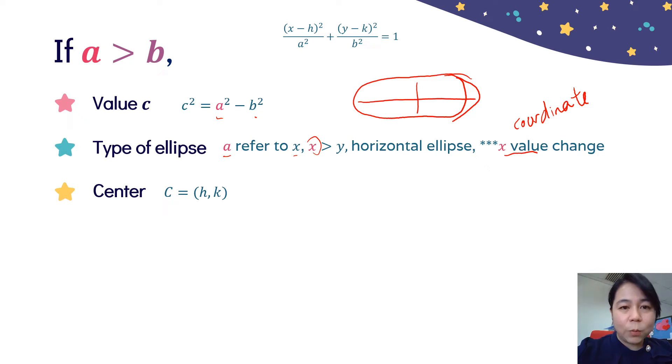For the center, always same. Take from the formula H, K. For the foci, F₁, it is (h+c, k). The x coordinate change. Remember F plus C, F minus C. For the foci, F₂, it is (h-c, k).